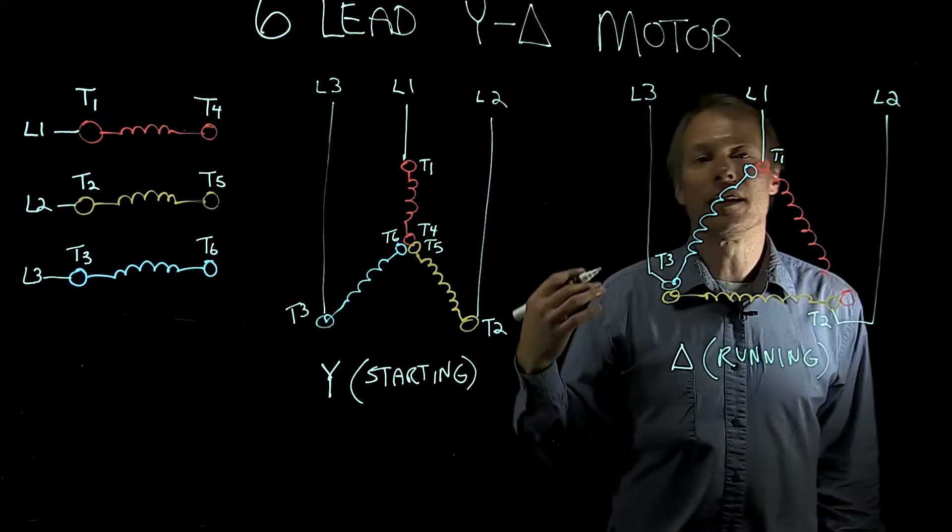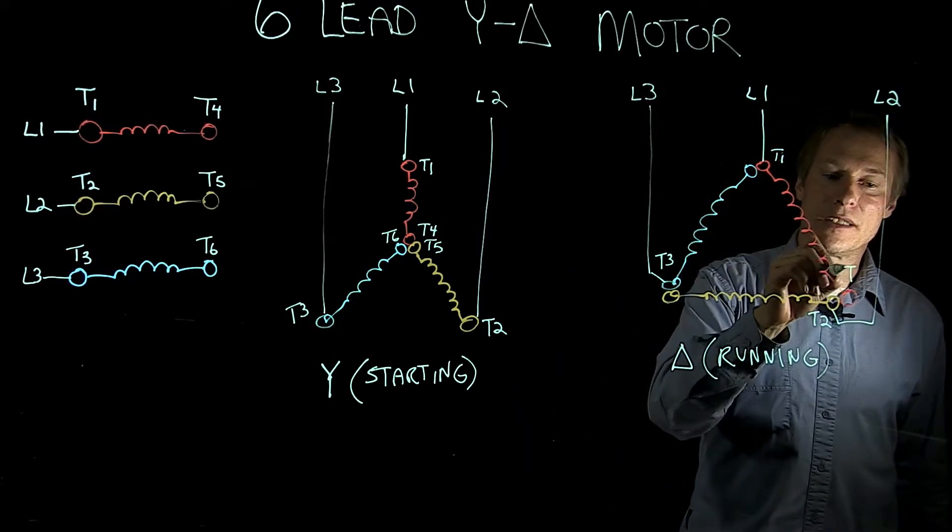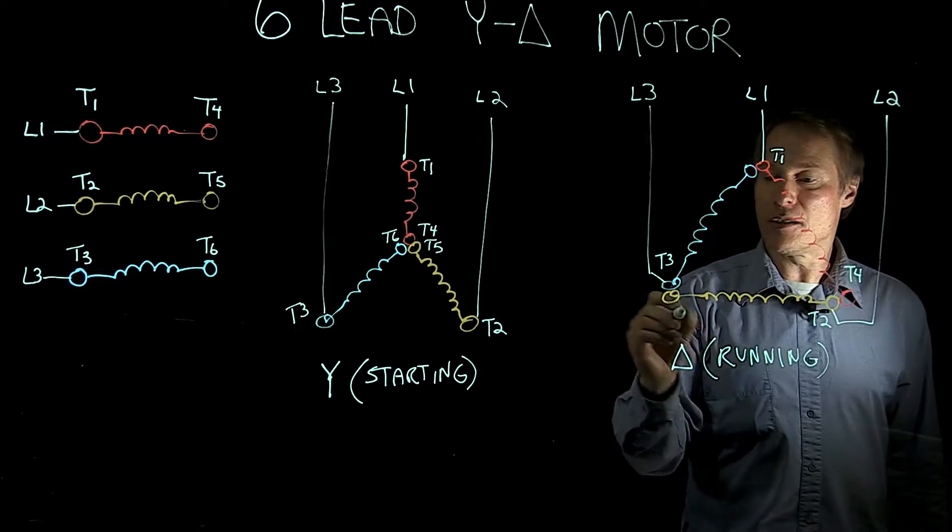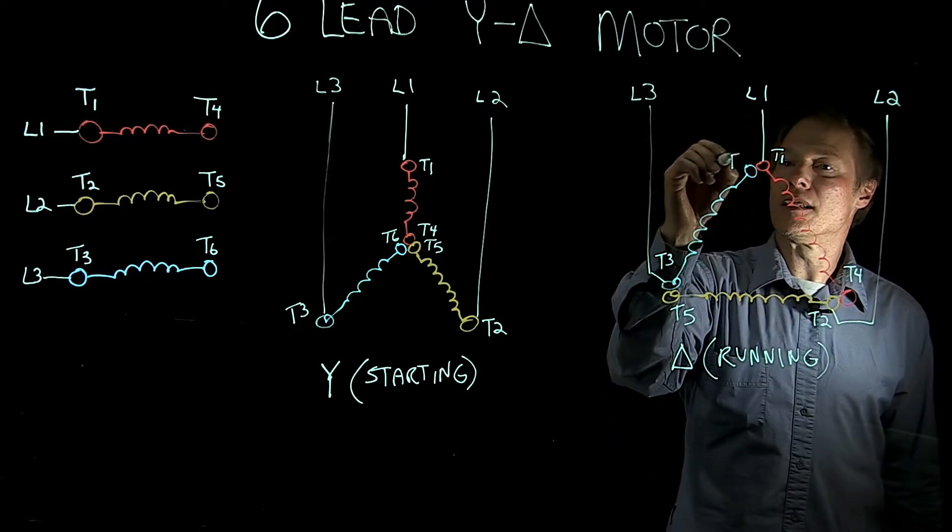So if we look at the other ends of our windings, if this is T1, this has to be T4. If this is T2, this has to be T5, T3, and T6.